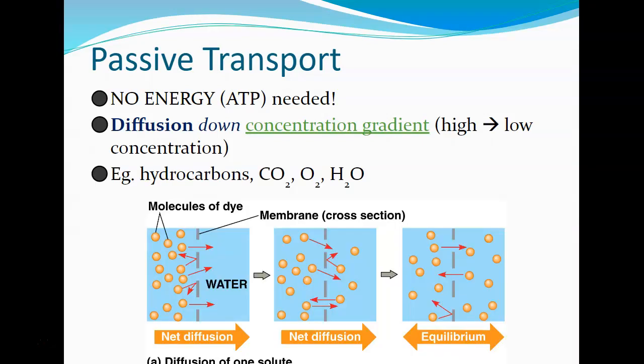Because it's passive, there's no energy — and for the cell, energy means ATP. Things move down the concentration gradient from high to low concentration. The gradient is the fancy science term for that. Things include hydrocarbons like hydrocarbon tails for lipids, carbon dioxide, oxygen, and water.